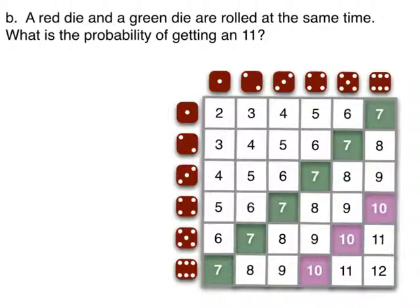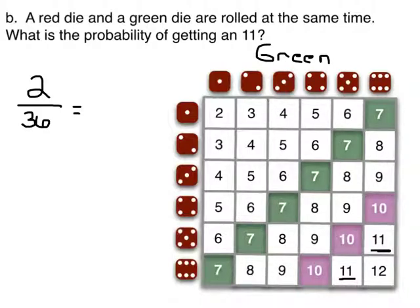All right, coming back to our chart, let's say that this is green up here, and these on the side are red. A red die and a green die are rolled at the same time. What is the probability of getting an 11? Well, we have an 11 here and here, so we only have 2 chances out of 36, which we'll reduce to 1 in 18.